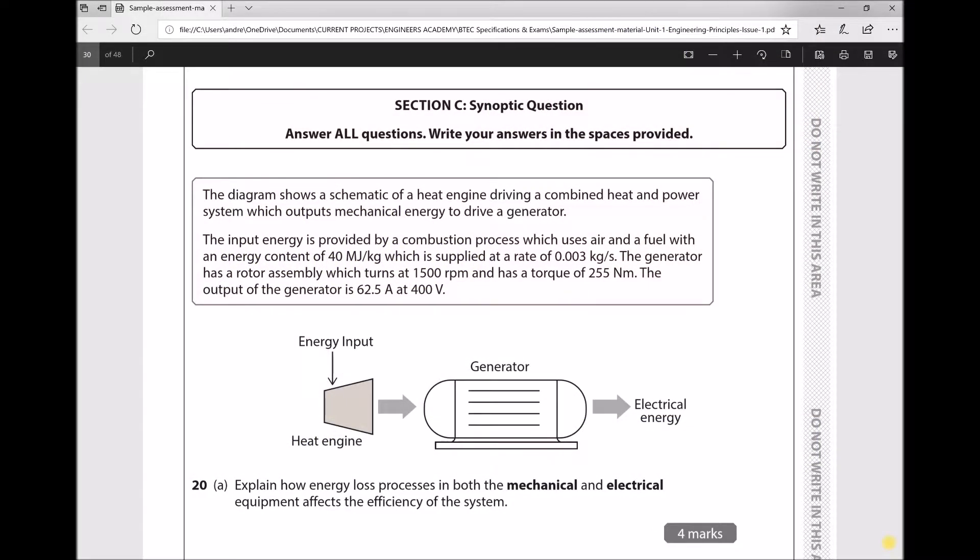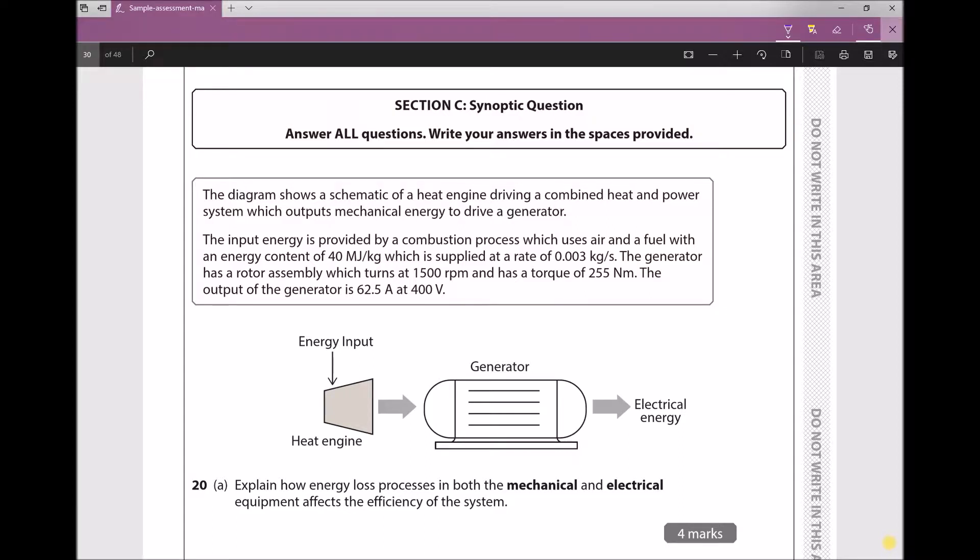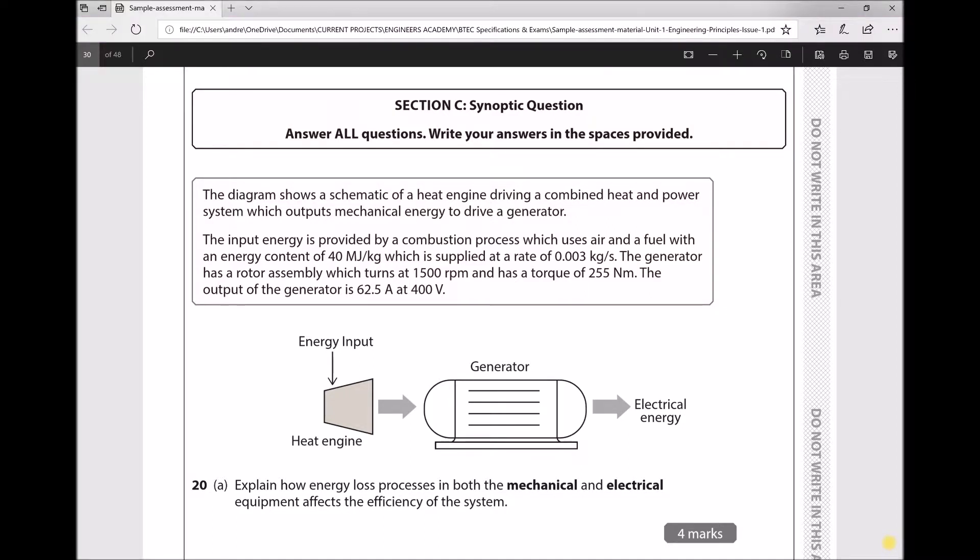The final question in the mock exam reads as follows: The diagram shows a schematic of a heat engine driving a combined heat and power system which outputs mechanical energy to drive a generator. The input energy is provided by a combustion process which uses air and fuel with an energy content of 40 megajoules per kilogram, supplied at a rate of 0.003 kilograms per second. The generator has a rotor assembly which turns at 1500 RPM and has a torque of 255 Newton meters. The output of the generator is 62.5 amps at 400 volts.